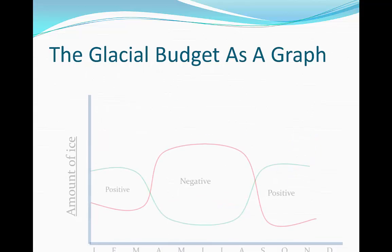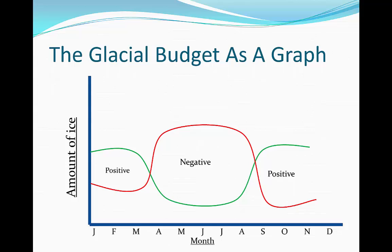The glacial budget as a graph. Similar to the water budget, which we looked at in rivers in our previous topic, the glacial budget can be shown by how much ice is going to be in the glacier over time. In the early months, we have a positive glacial budget because temperatures are always relatively low. Then in the summer, when temperatures rise — for example in May, June, July — we have a negative glacial budget because there is less ice than there was before.